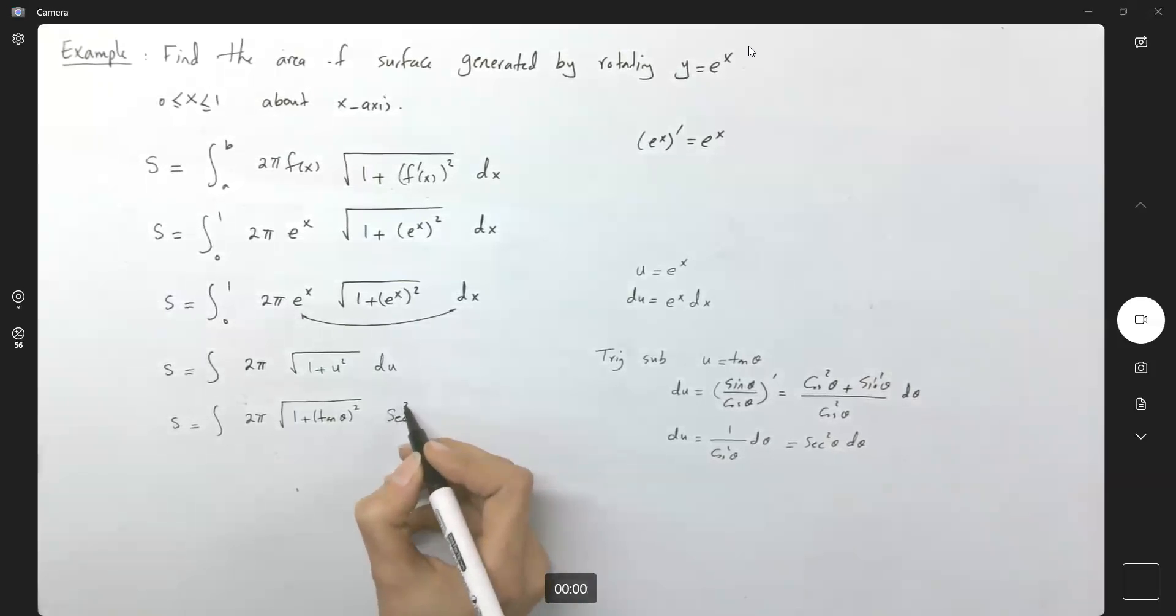Very good. So so far we have sec^2 θ dθ, but note that here you have 1 plus tan^2 θ which is sec^2 θ. So S becomes the integral of 2π √(sec^2 θ) times sec^2 θ dθ.